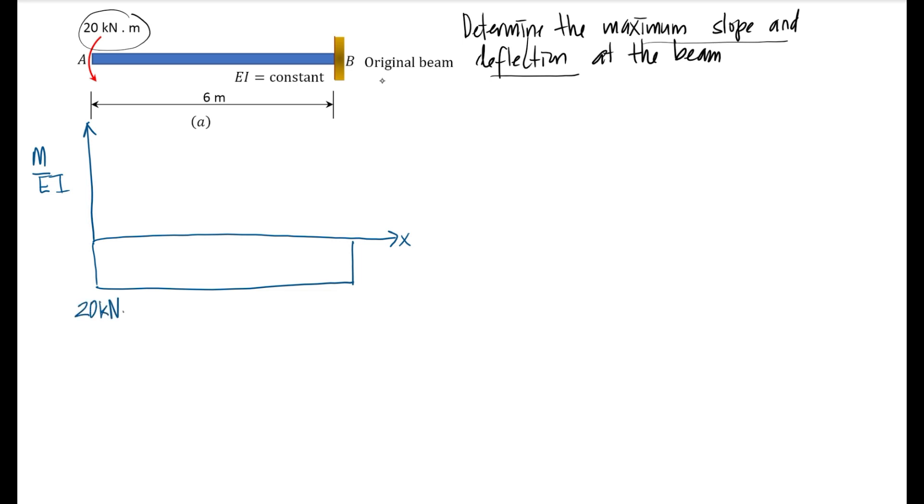Then we draw the elastic curve of the beam. In the cantilever beam, we know that for fixed point A, deflection equals zero and slope equals zero. So we draw the elastic curve like this.